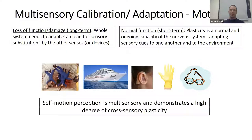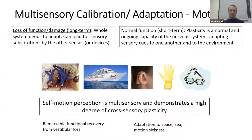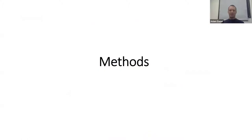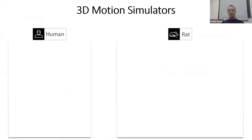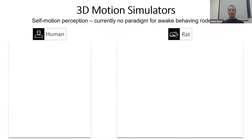Multi-sensory plasticity is an ongoing capacity we constantly need to use in order to adapt to the environment. Self-motion perception is particularly interesting for studying multi-sensory calibration because if someone loses their vestibular sense they have remarkable functional recovery. We constantly need to adapt — when you get in a boat and when you get off you feel different. Self-motion is an inherently multi-sensory perception and a great domain to study multi-sensory adaptation.